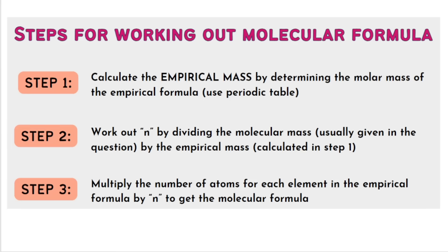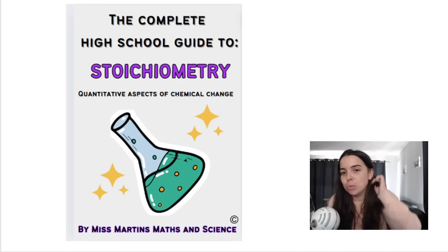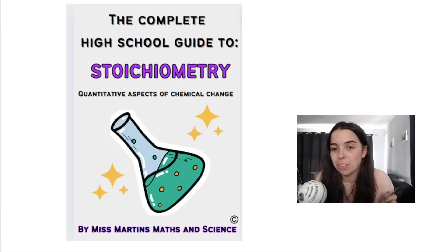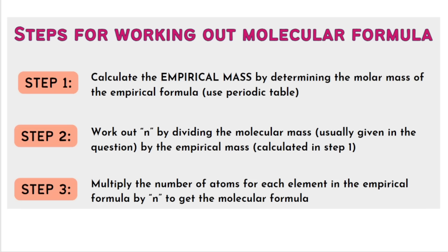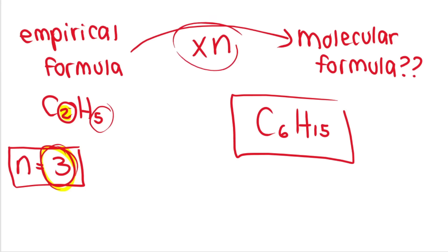Here are the steps for working out the molecular formula. Step one: work out the empirical formula — covered in previous videos. Step two: calculate the empirical mass from the empirical formula. Step three: calculate n using n = molecular mass divided by empirical mass. Step four: multiply the number of each atom in the empirical formula by n to get the molecular formula. I have a study guide with 50 worked examples available on my website — link below.